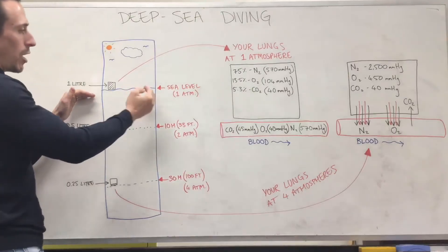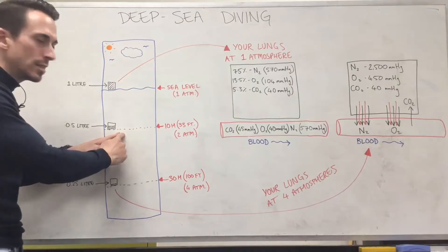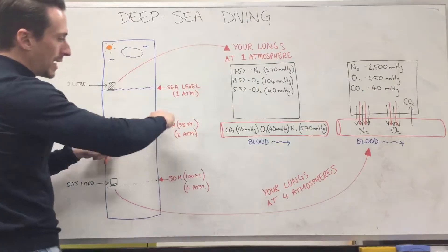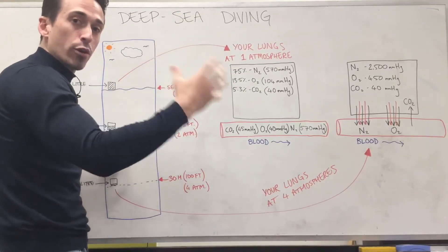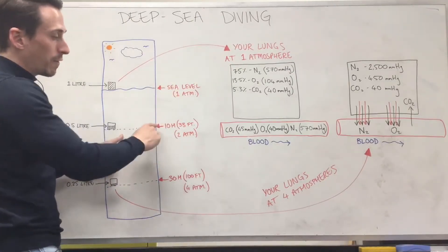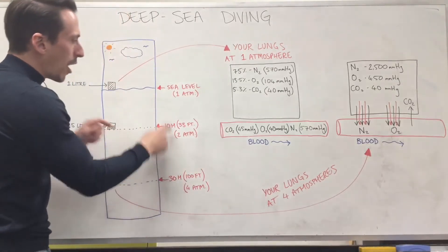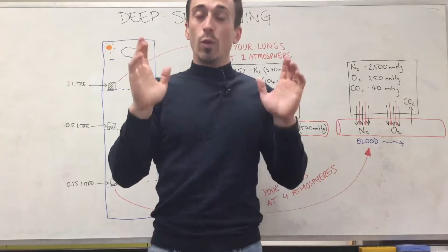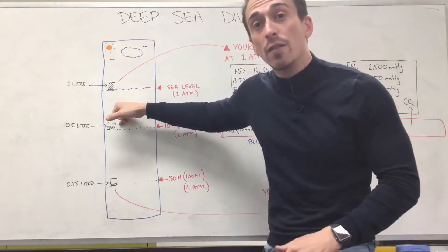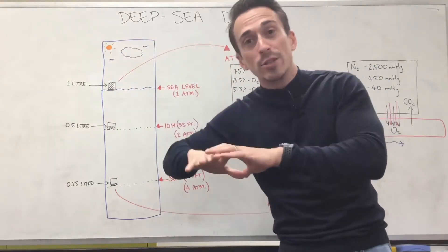Now what happens is as we start to dive, so we're diving now, we've jumped off the boat, we're going down to 10 meters. At 10 meters, we've actually now got two atmospheres of pressure on us. What you'll find is for every 10 meters, add an additional atmosphere of pressure onto us. That's equivalent to 33 feet. Every 33 feet or 10 meters, add another atmosphere.